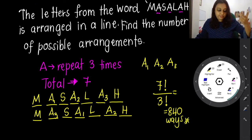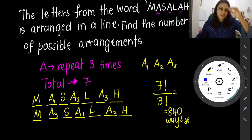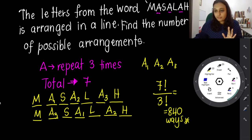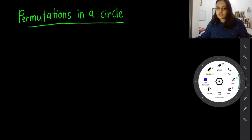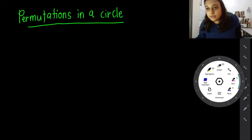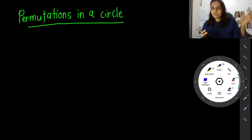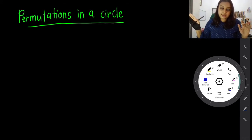Take note: if the objects are identical, you have the same things to arrange, and you divide by their factorial. That's one example for identical objects. Now let's look at the example for arranging in a circle - that one will be interesting. When you arrange in a line, you start from the left or right side. But if you're arranging in a circle, which side are you starting from?